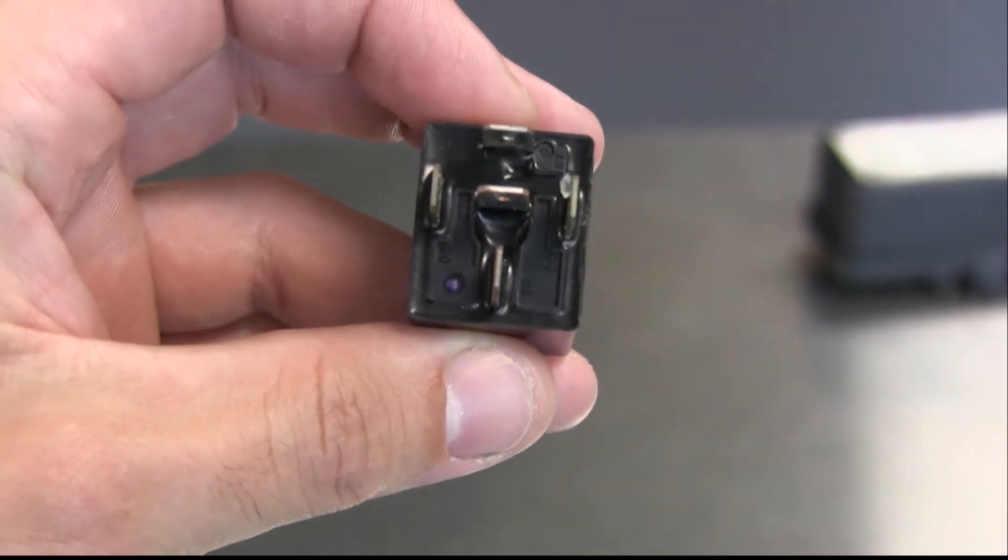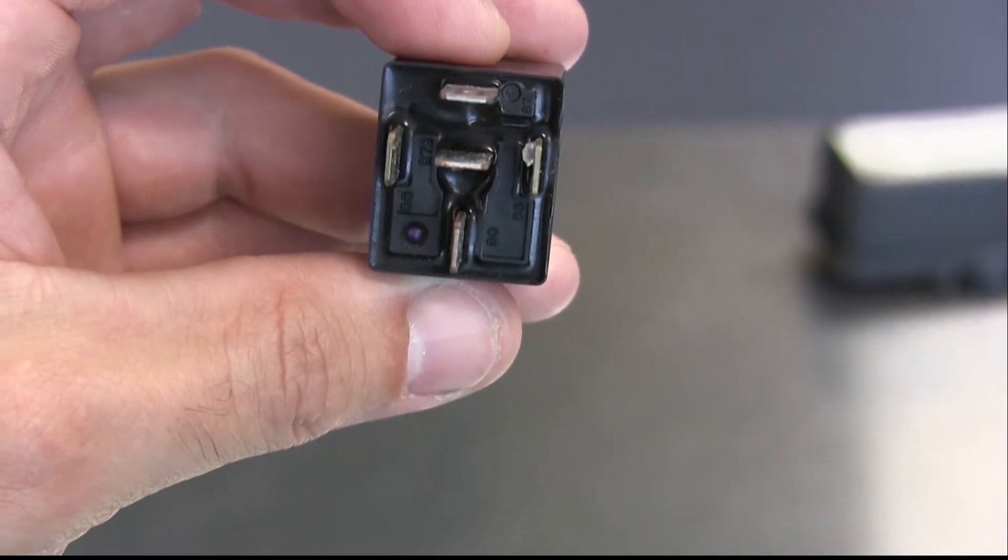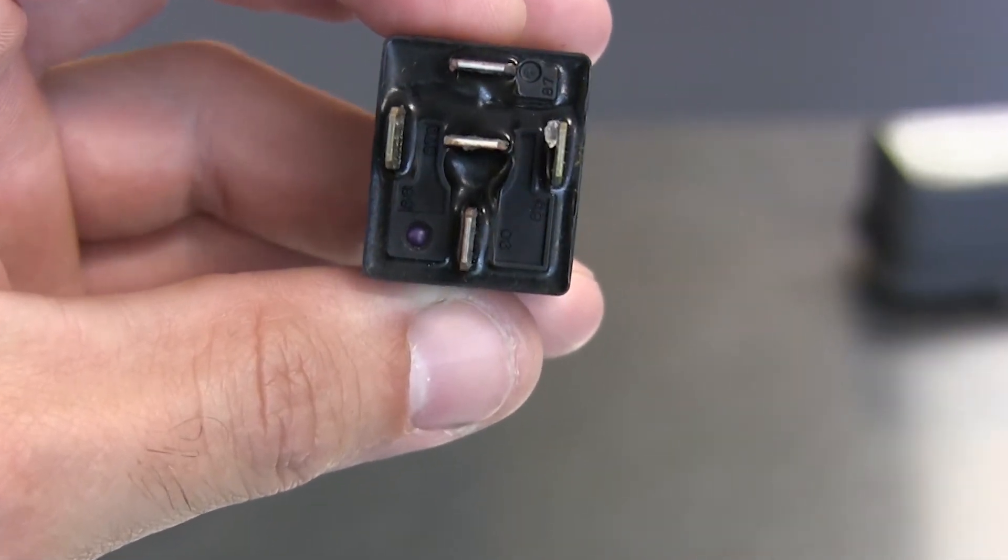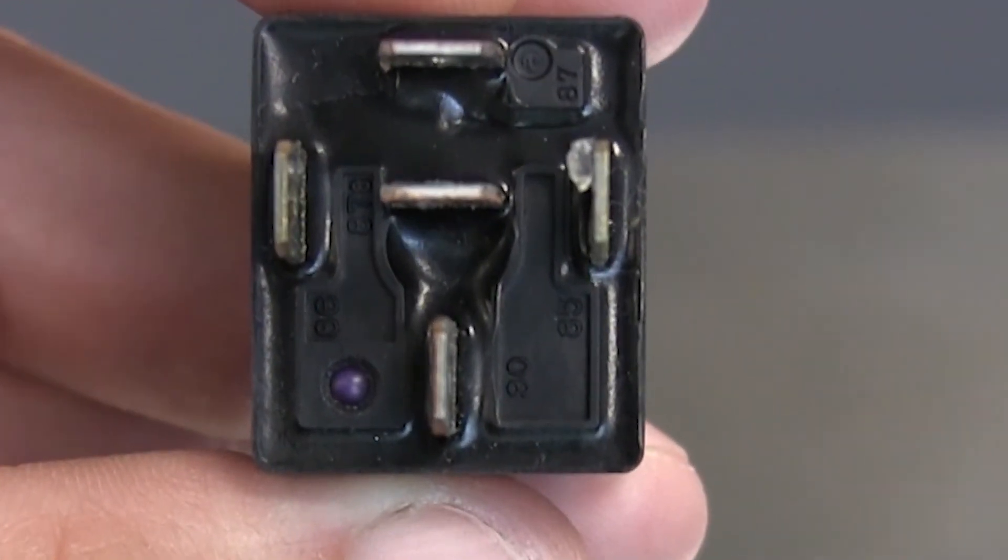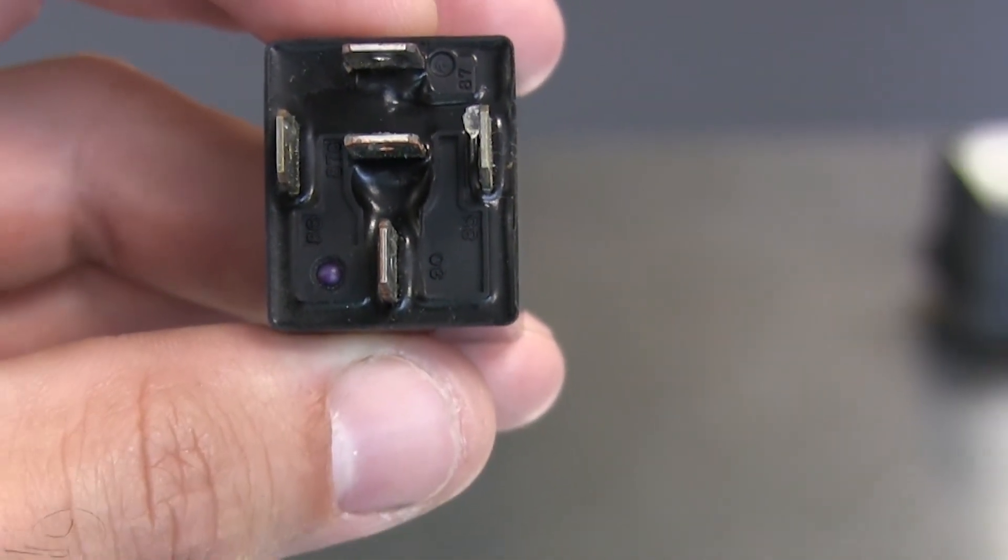When you remove the relay from the fuse box, all of them have the terminal numbers printed underneath beside the pins. So you should easily be able to tell which terminal inside the fuse box connects to which terminal on the relay.